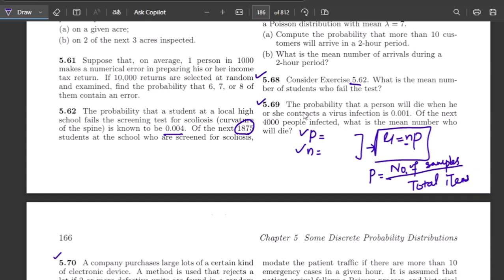In question 5.69, the probability that a person will die when he or she contracts a virus is 0.001 of the next 4000 people infected. What is the mean number who will die? Here again n is given, p is given. By using the same formula we can find out the value. So let me find them out.